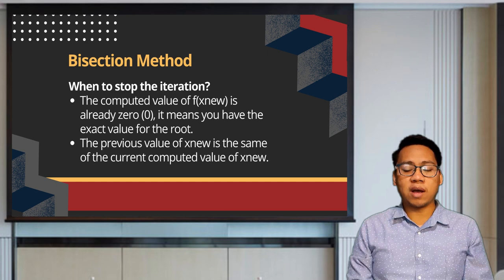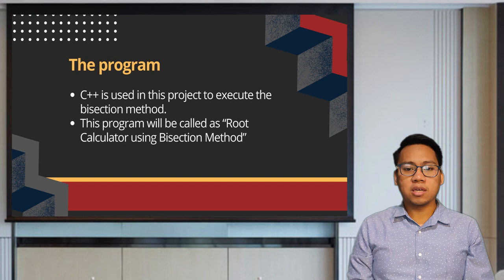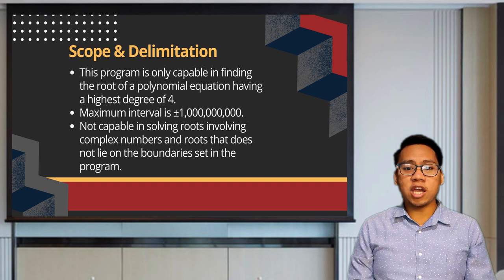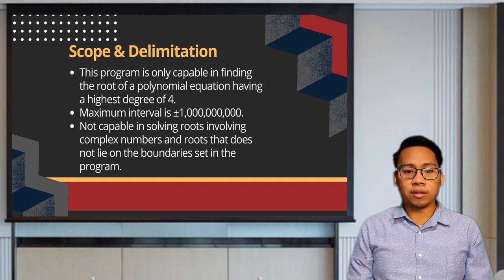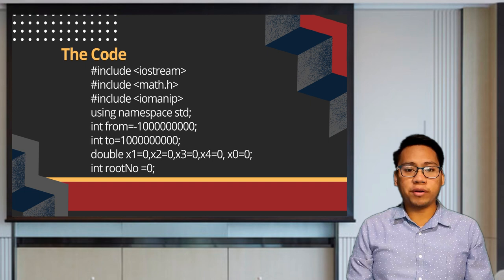In this program, we will use C++ to execute the bisection method. The name of this project is Root Calculator Using Bisection Method. This program is only capable of finding the root of a polynomial equation having a highest degree of 4. The maximum interval used is from negative to positive 1 billion. We provided holders for the value of the numerical coefficients: x1, x2, x3, x4, and x0.